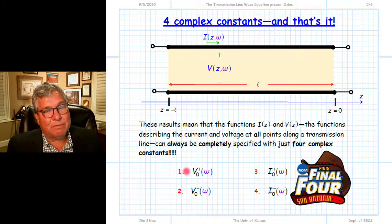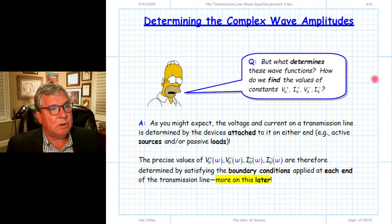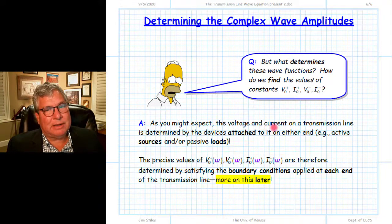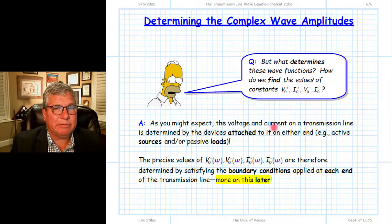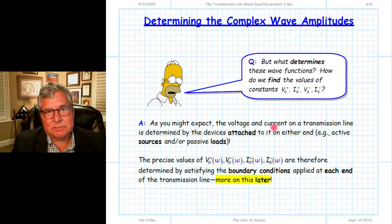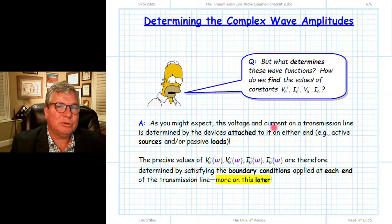So how do we find these four complex wave amplitudes, these four complex constants? They depend on what is connected to either end of the transmission line. What we did was find the solutions to the telegrapher equations by deriving the transmission line wave equations and finding the general solutions — exponentials of plus or minus jβz. But like any solution to a differential equation, there are constants involved. We can find the solution to within a constant.